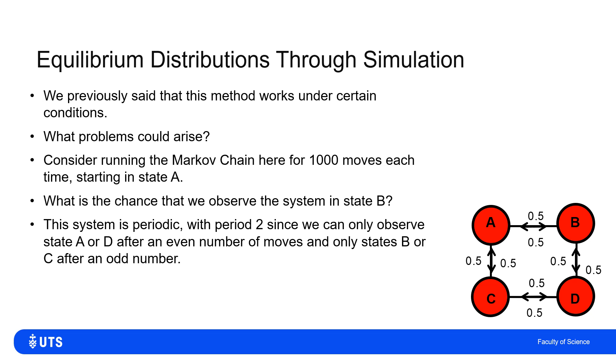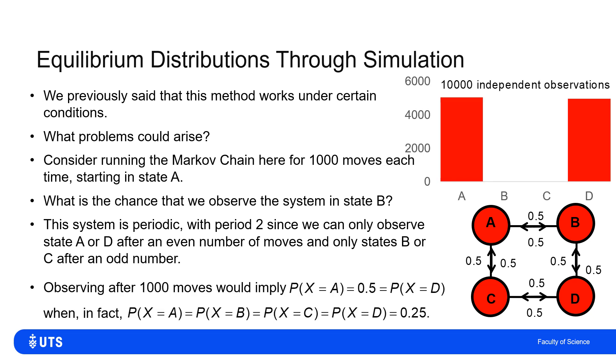Well, it's going to be zero because the system is periodic with period two because it's in A, then one move in the future, it's in B or C. Then one move in the future, it's in A or D. Then one move in the future, it's in C or B. Then one move in the future, A or D. So we can only get back to itself in multiples of two moves. So that is periodic period two. Now, if I tried to do the equilibrium distribution here through simulation, I get this misleading belief that it's going to be 50% A, 50% D, when in fact it should be 25% for A, B, C and D each.